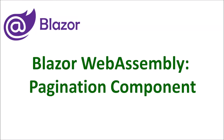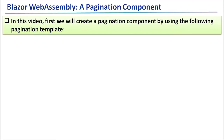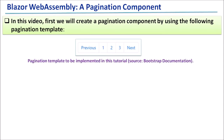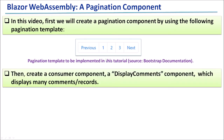Blazor WebAssembly pagination component. In this video, first we will create a pagination component by using the following pagination template. This is the pagination template we are going to implement in this tutorial. Then create a consumer component, namely a display comments component, which displays many comments or records.